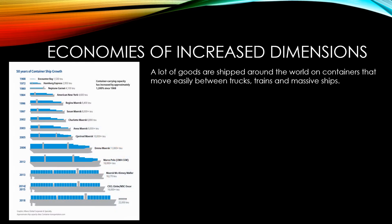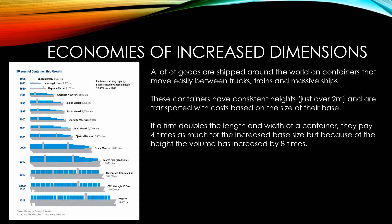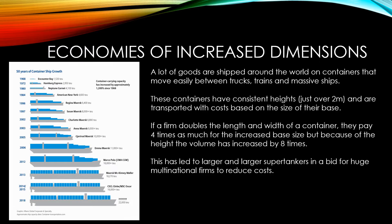Economies of increased dimension are available to very large firms that ship their goods all over the world. Firms pay for space on huge shipping freighters based on the base size of their containers. If a firm doubles the length and width of a container, they pay four times as much for the increased base size. But because the containers are two metres high, the volume has actually increased by eight times. This has led to the development of larger and larger supertankers in a bid for huge multinational firms to reduce their costs.